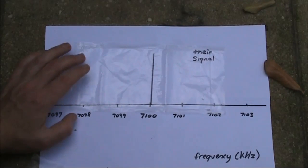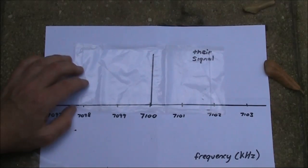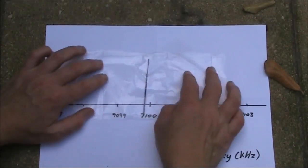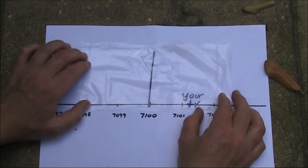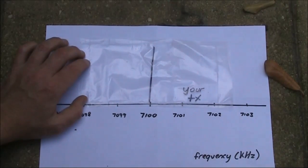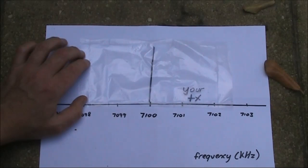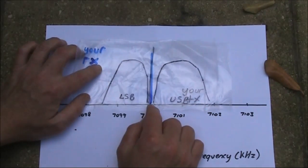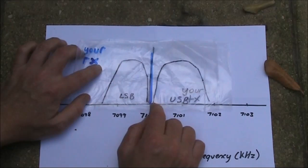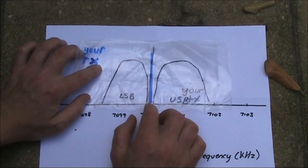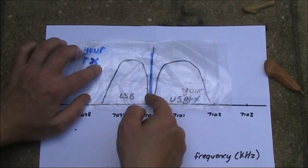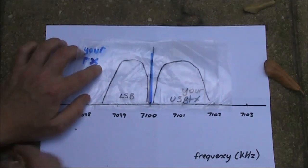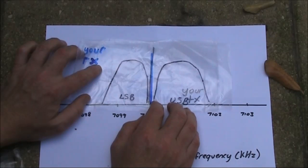Let's suppose that instead of you trying to call another station, you are sending CQ on 7100 on CW, and you've got a direct conversion receiver. If your receiver is going off the same local oscillator as the transmit, and you haven't put in any frequency offset, if the station was to transmit exactly on the same frequency as you were, then the chances are you wouldn't hear them.